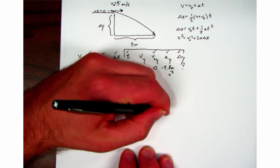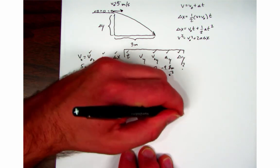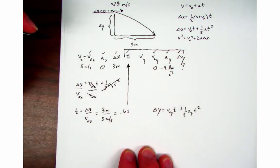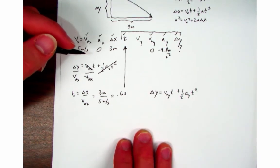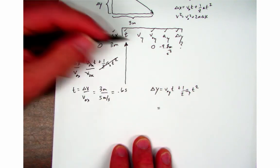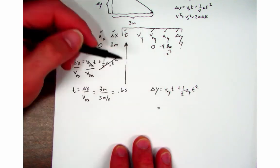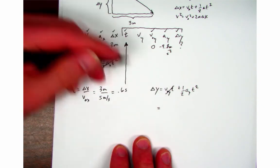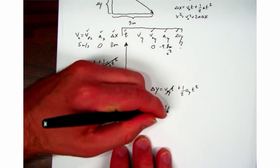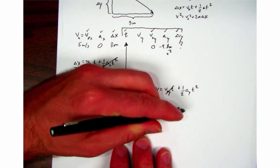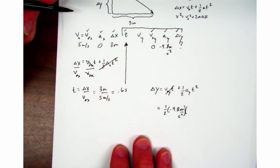So delta y equals v naught y t plus one half a_y t squared. I don't have to do any rearranging. I just put in the variables as they are. So v naught y is zero so that entire term will cross out, and I'm left with one half times negative 9.8 meters per second squared times my time which is 0.6 seconds squared.